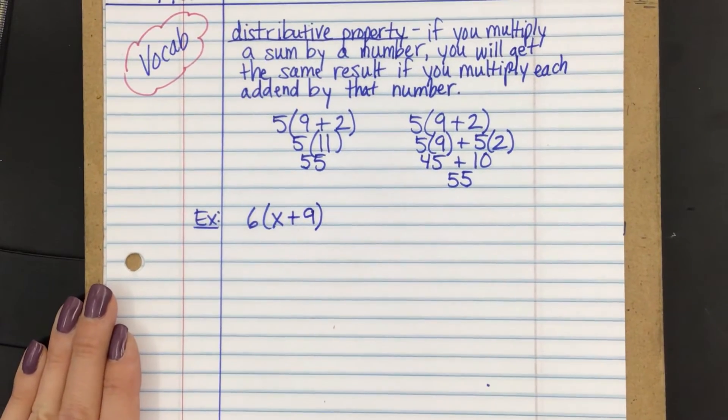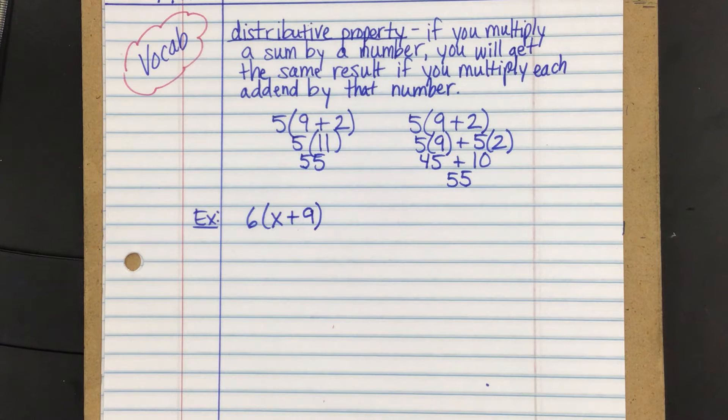Now, so far in our expressions unit, we've evaluated expressions, and then we're simplifying expressions. Those are the two things we do with expressions. We either evaluate them or we simplify them. And in this case, we don't know what x is, so we can't evaluate it. So the only thing we can do is simplify. And today we're simplifying by distributing.